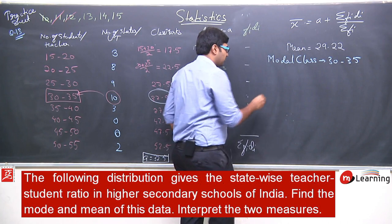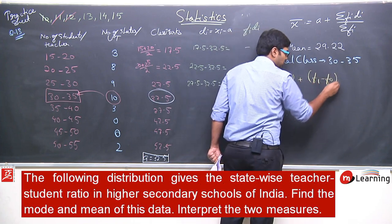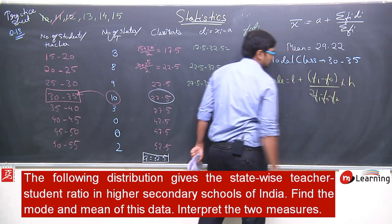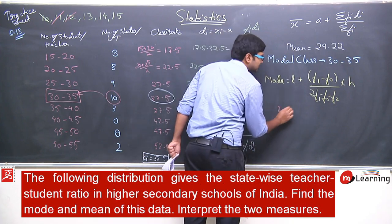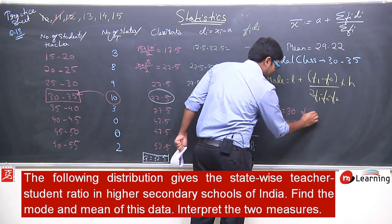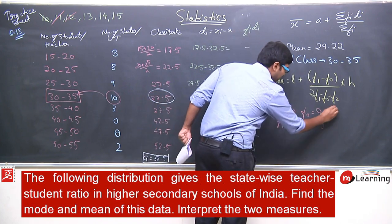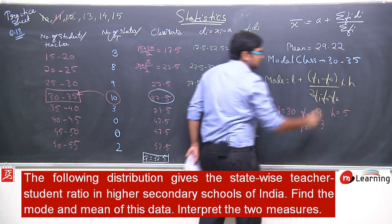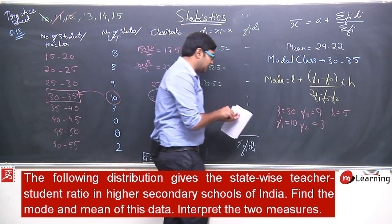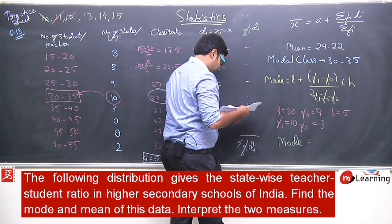We apply the formula for mode: Mode = L + [(f1 − f0) / (2f1 − f0 − f2)] × h. Here L = 30 (lower limit), f1 = 10 (frequency of modal class), f0 = 9 (frequency of preceding class), f2 = 3 (frequency of succeeding class), and h = 5 (class width). Substituting these values, the mode comes out to be 30.6.